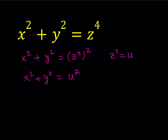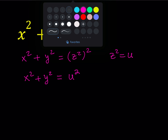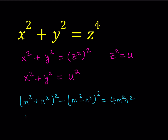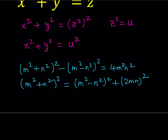Here's how it goes. There's an identity we've been using in many different videos. If you take m squared plus n squared, square it, and subtract m squared minus n squared, squared, this looks like (a+b)² minus (a−b)², which always equals 4ab. So the result is 4m²n². Isolating m squared plus n squared squared, we get: (m² − n²)² + (2mn)² equals (m² + n²)². This shows we've found triples satisfying the Pythagorean theorem.